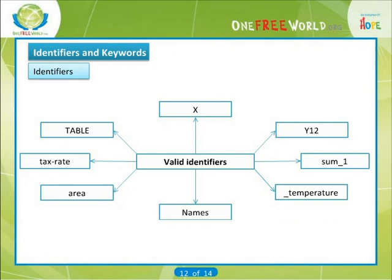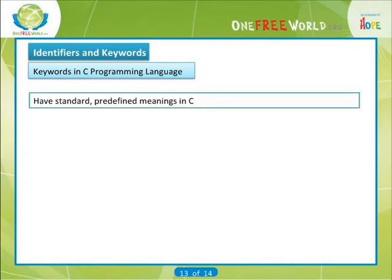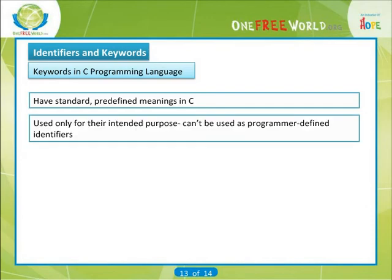Example of valid identifiers. Keywords in the C programming language. There are certain reserved words called keywords that have standard predefined meanings in C. These keywords can be used only for their intended purpose. They cannot be used as programmer-defined identifiers.